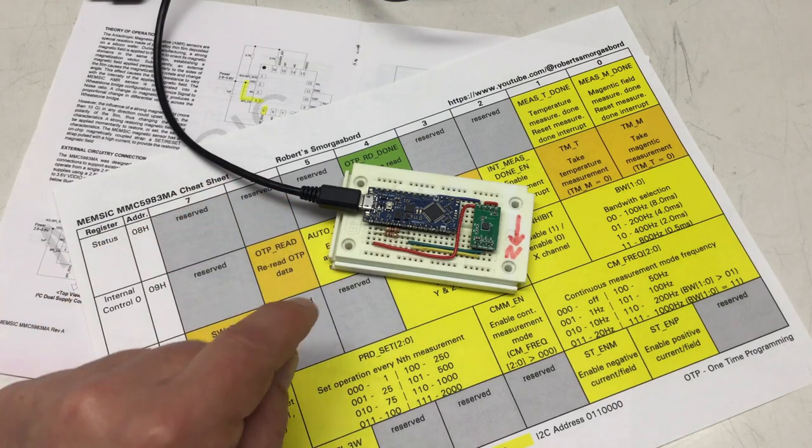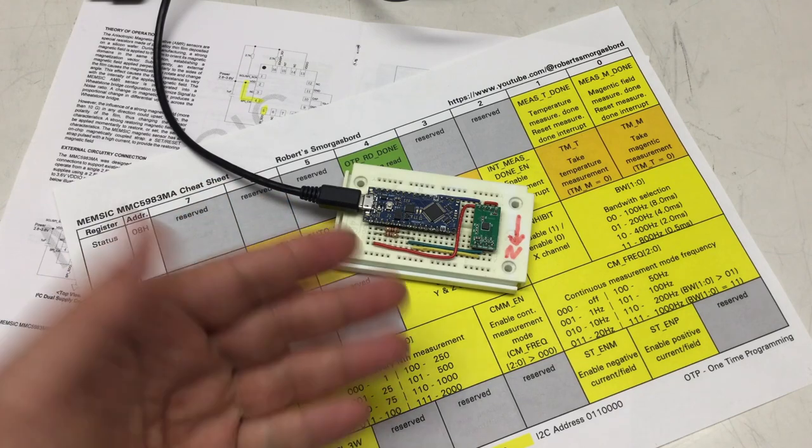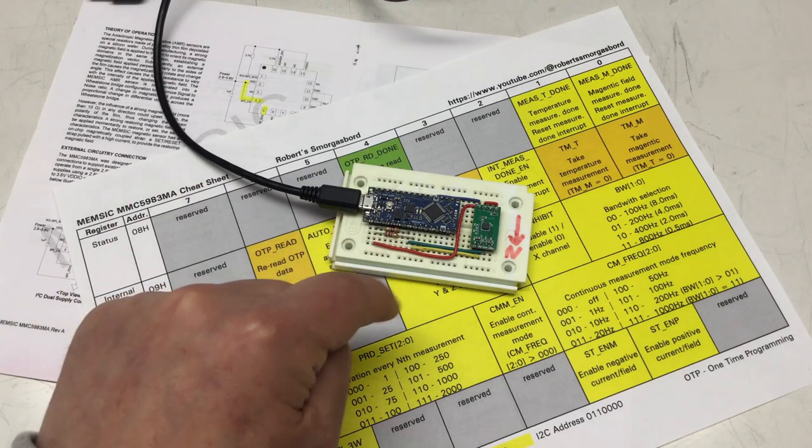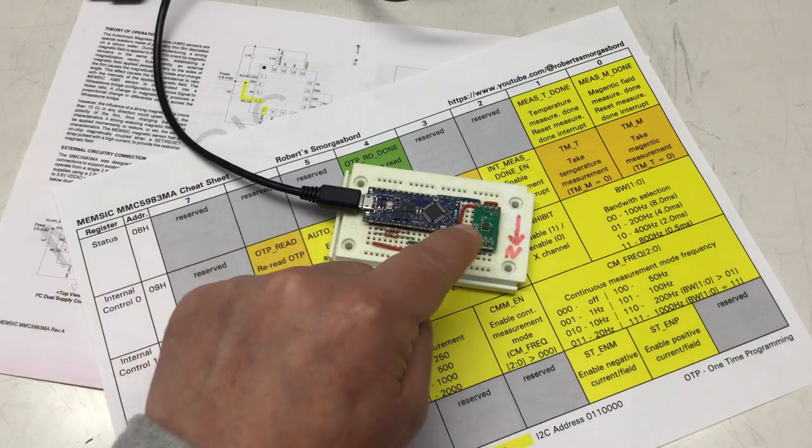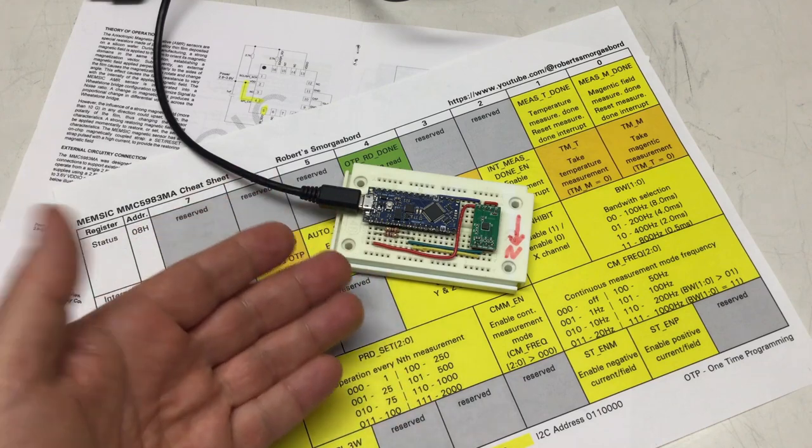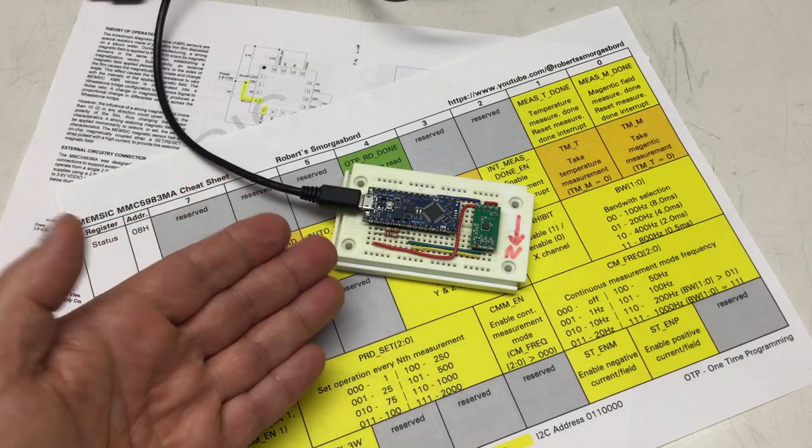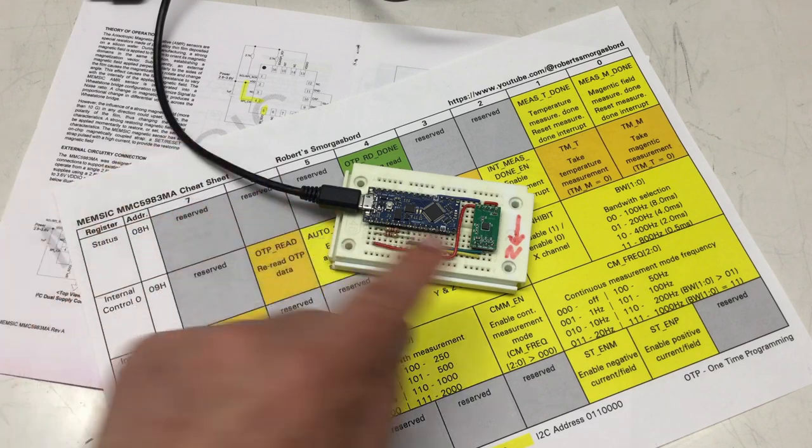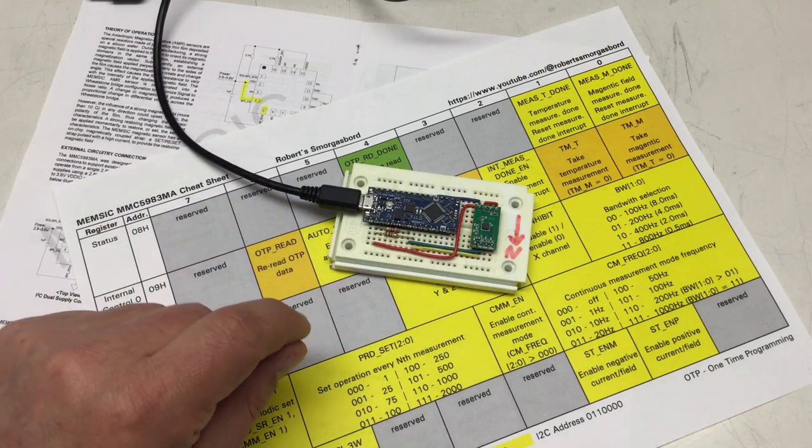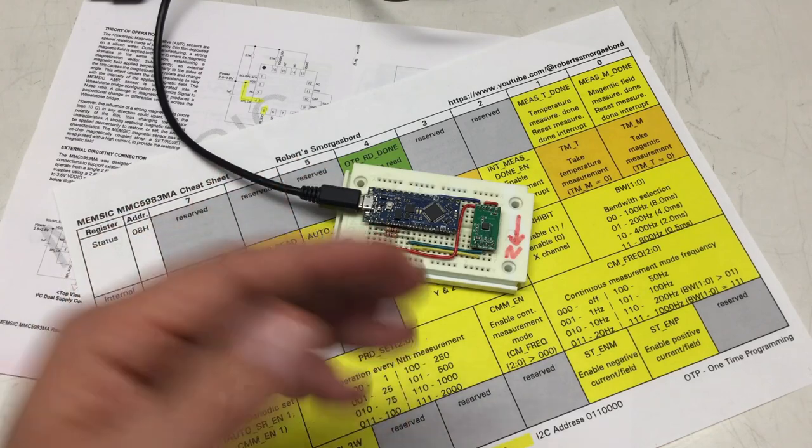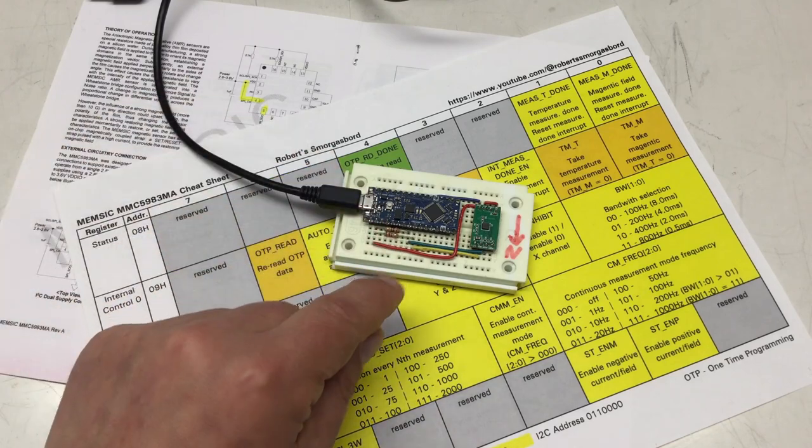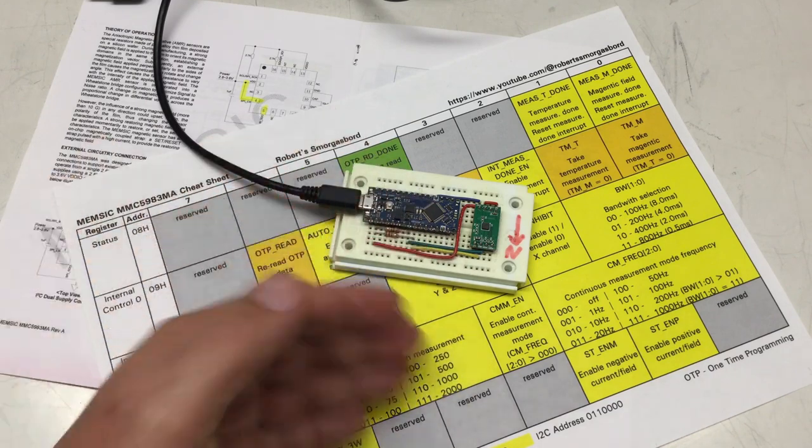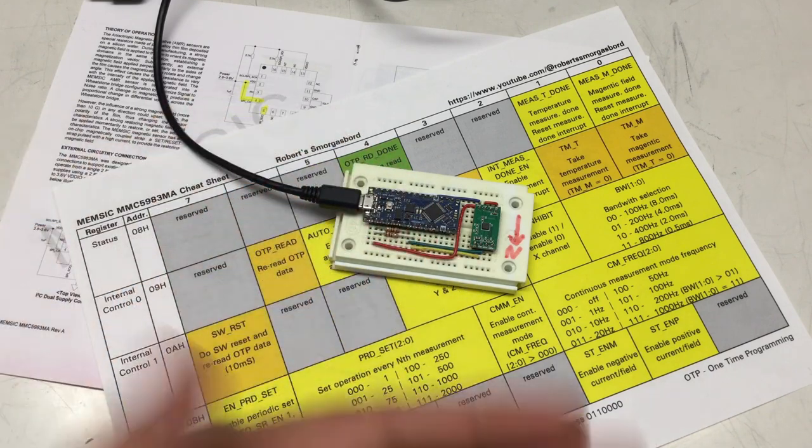Before we dive further into its functionality, we will have to do a deep dive into the inner workings of that thing. That is, the anisotropic magnetoresistive, or AMR, sensors that that thing is using. I feel that's necessary to really understand what some of the commands that chip understands are really doing. Enjoy!